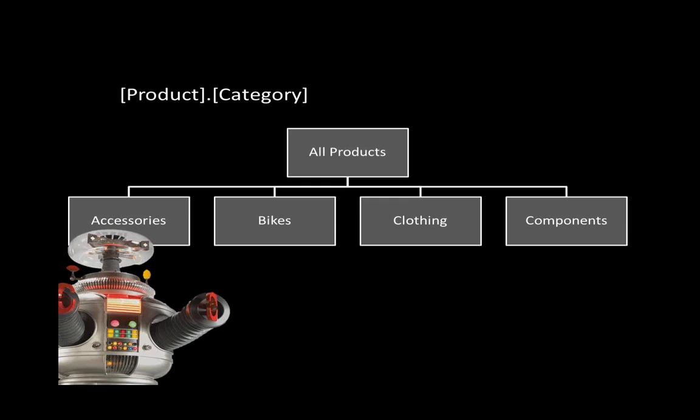So here we have an attribute hierarchy. This is our category attribute hierarchy within the product dimension.